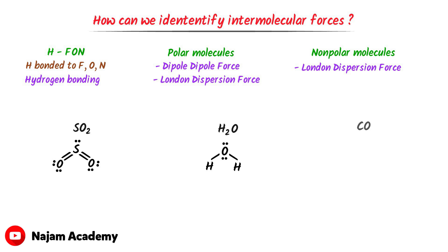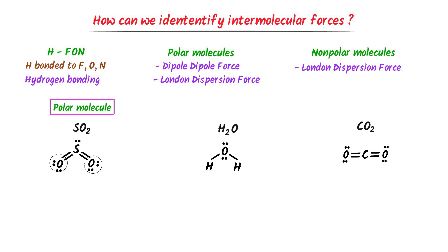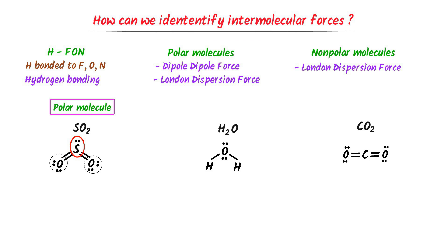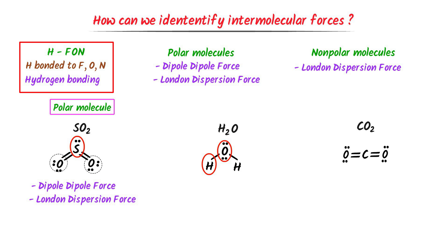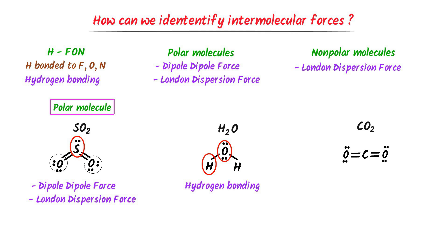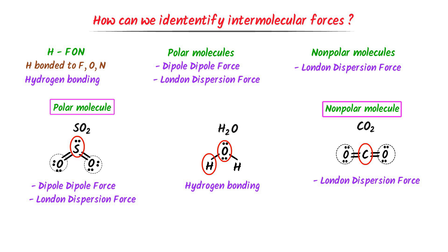For example, consider these molecules. In case of sulfur dioxide, it is a polar molecule. Although the surrounding atoms are the same, the central atom contains a lone pair of electrons. We know that if a molecule is polar, it contains dipole-dipole forces and London dispersion forces. So sulfur dioxide contains dipole-dipole forces and London dispersion forces. In case of water, hydrogen is bonded to oxygen, so it contains hydrogen bonding. In case of carbon dioxide gas, the central atom has no lone pair of electrons and the surrounding atoms are the same, so it is a non-polar molecule containing London dispersion forces.